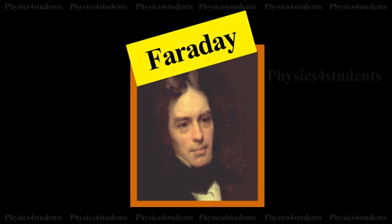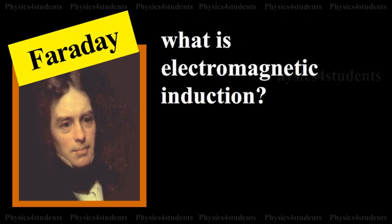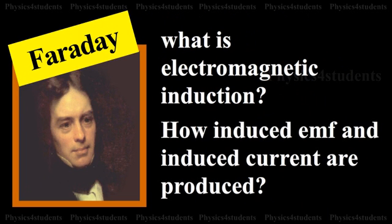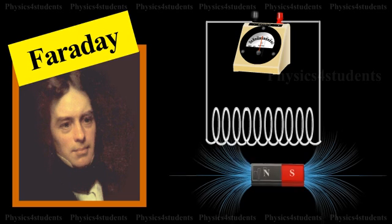In previous section, we have studied about what is electromagnetic induction and how induced EMF and induced currents are produced. And also, we have explained the experiment by using a cylindrical coil made up of several turns of insulated copper wire and a strong bar magnet.